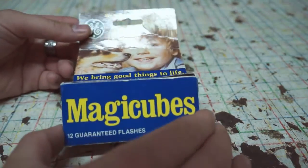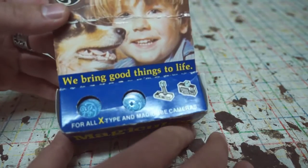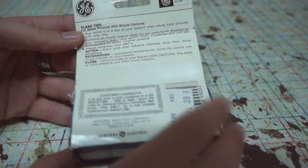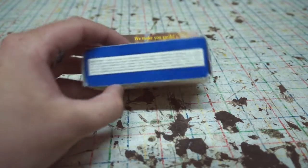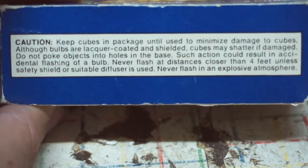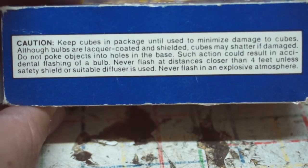A friend of mine gave me these GE magic cubes. They're a disposable flash for old film cameras. On the back there's a bunch of tips on how to use them, and on the bottom there's a pretty lengthy caution message that mentions being able to accidentally set them off without the camera.